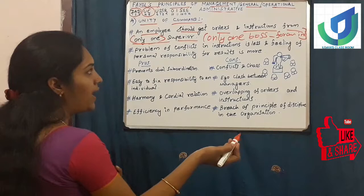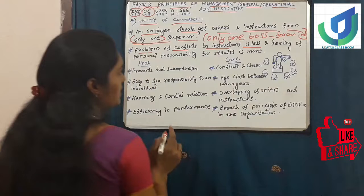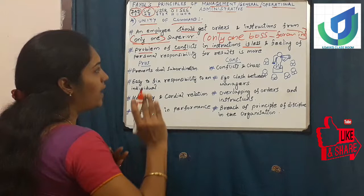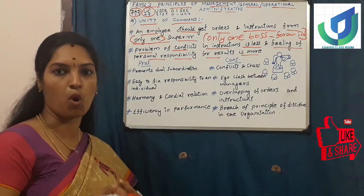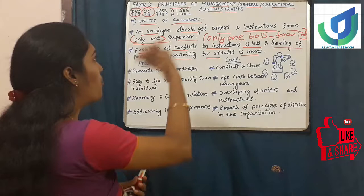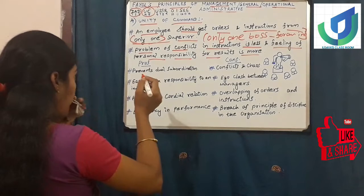Why should an employee get instructions from only one boss? The problem of conflicts in instructions is less. When we receive instructions from one person we will not get any confusion. And naturally we will get self-responsibility in order to perform the task. This is the important thing propounded by Henry Fayol in this principle.